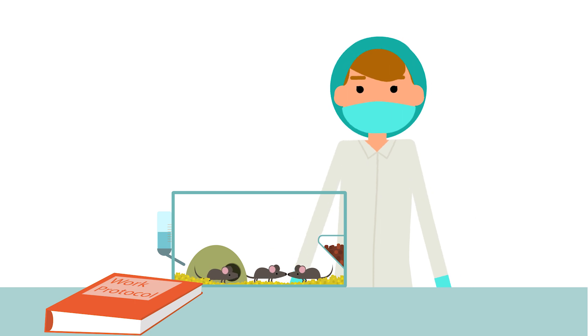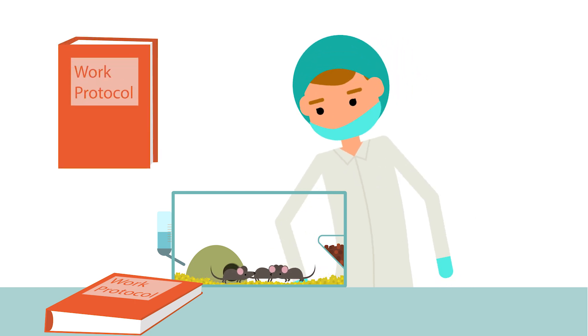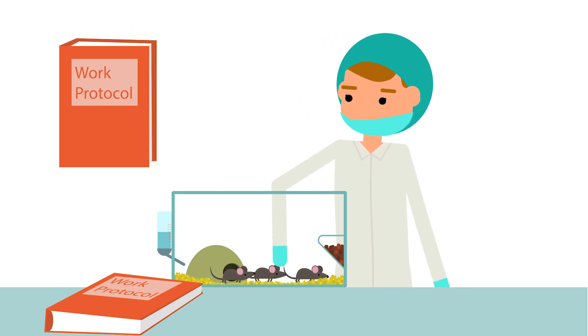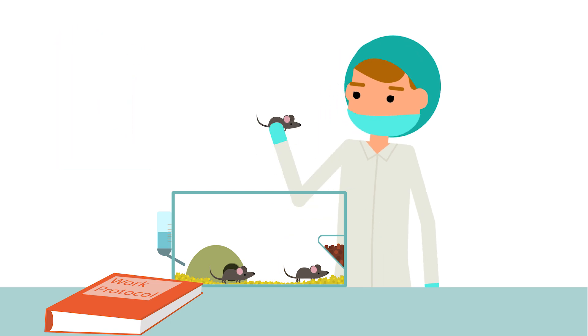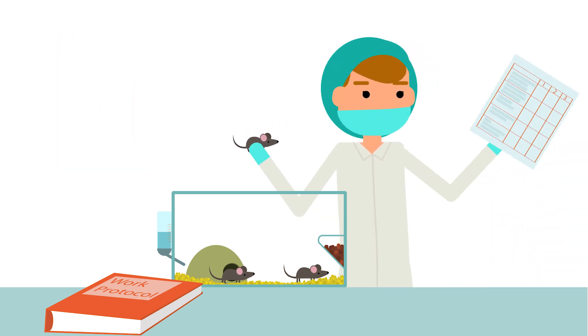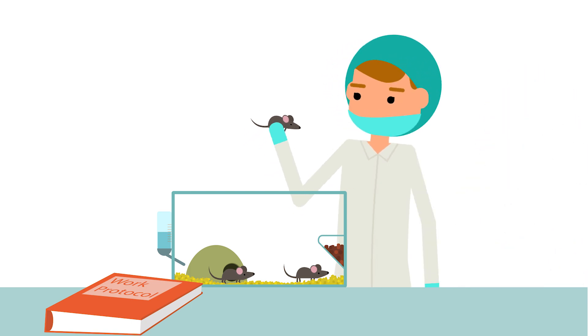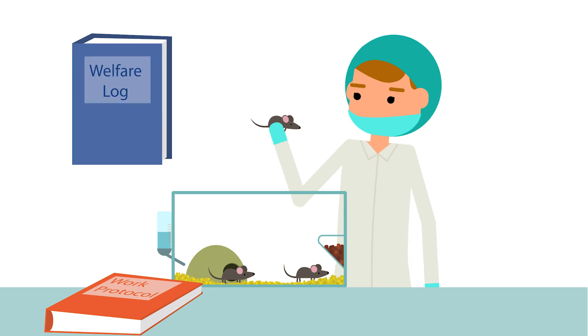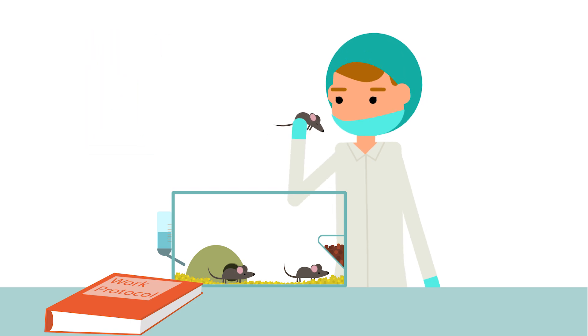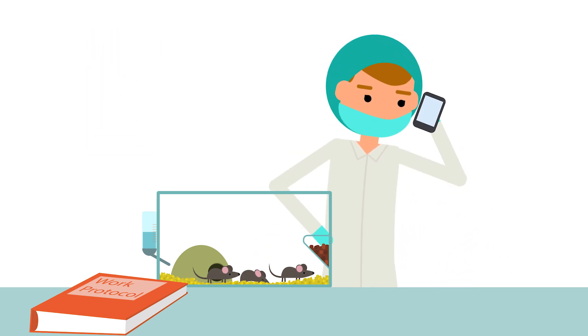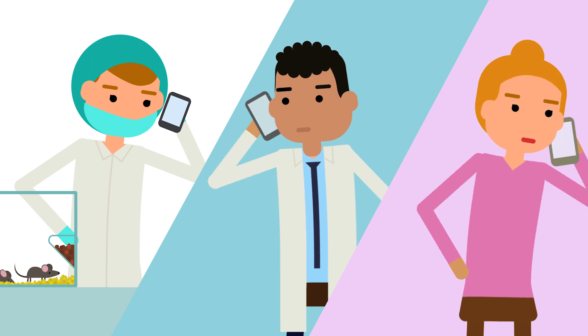During an animal experiment, you always follow the WORK protocol, which says how and how often the animals should be monitored. You can use a score list of clinical symptoms and always be alert to extra signs of discomfort. Record all your observations in detail in the WELFARE log. If there is unexpected discomfort, immediately consult other experts and take action.